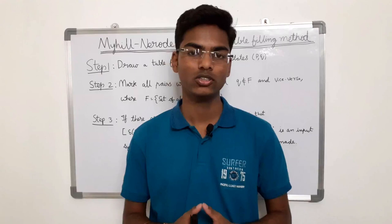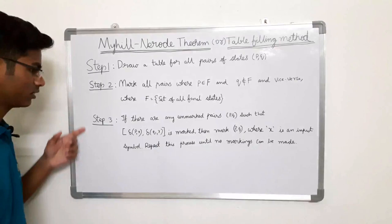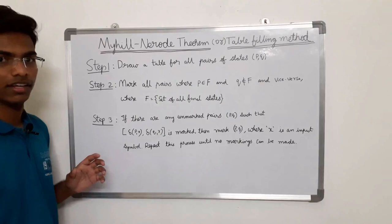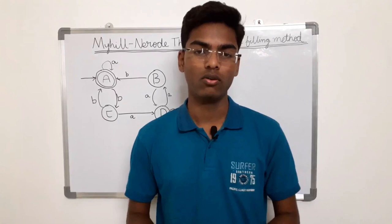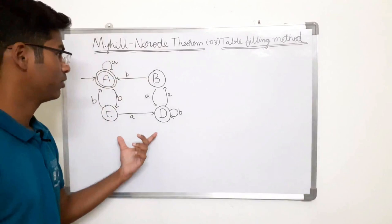Hi all. The Myhill-Nerode theorem, also called the table filling method, is used for minimization of DFA. It contains three steps. If you don't understand these three steps, don't worry — I'll explain them while solving the problems. Take a note or screenshot because I'll be erasing them. Now let us solve a problem using the Myhill-Nerode theorem.